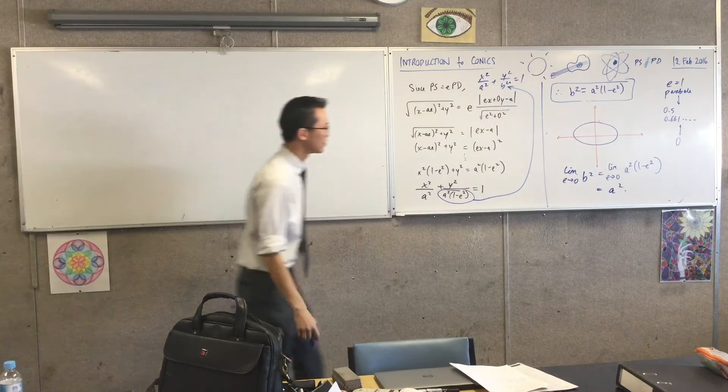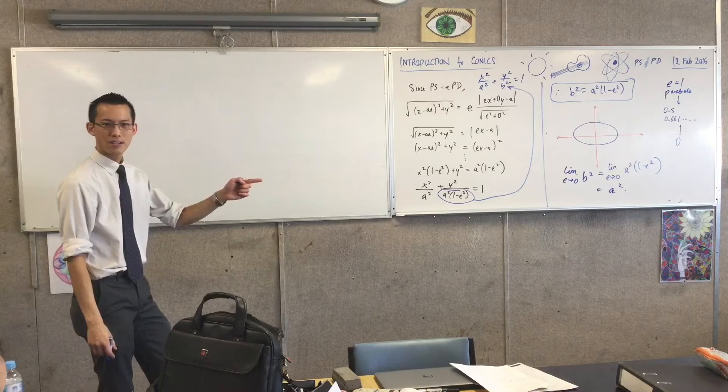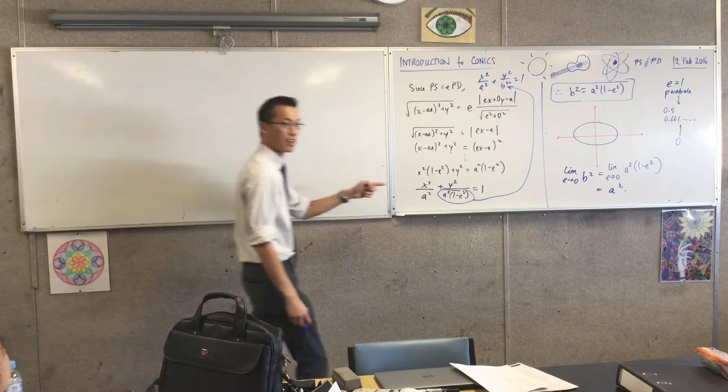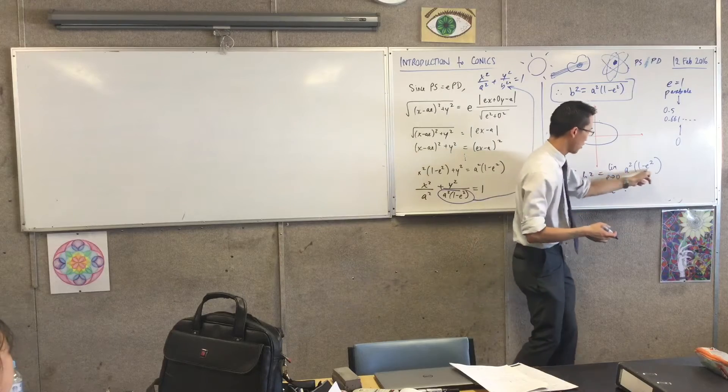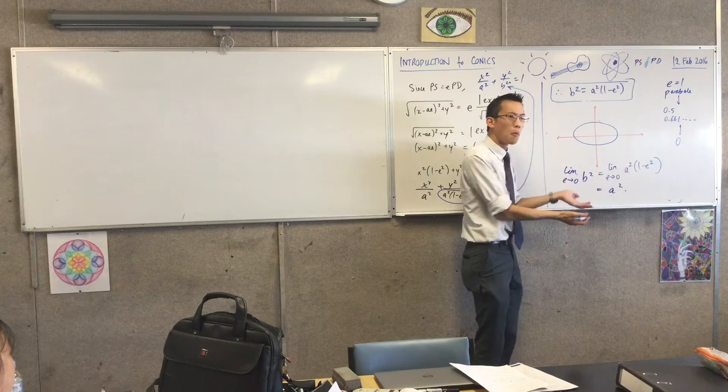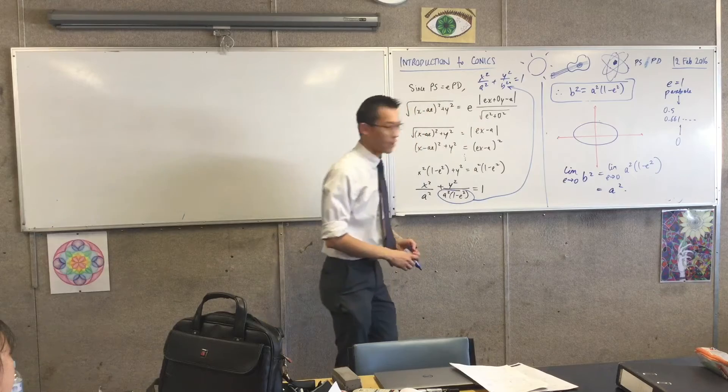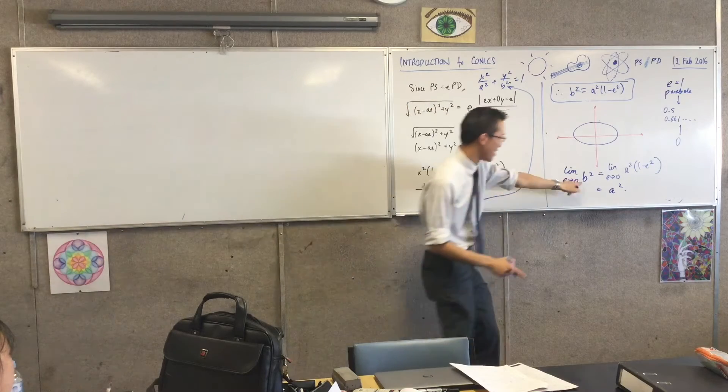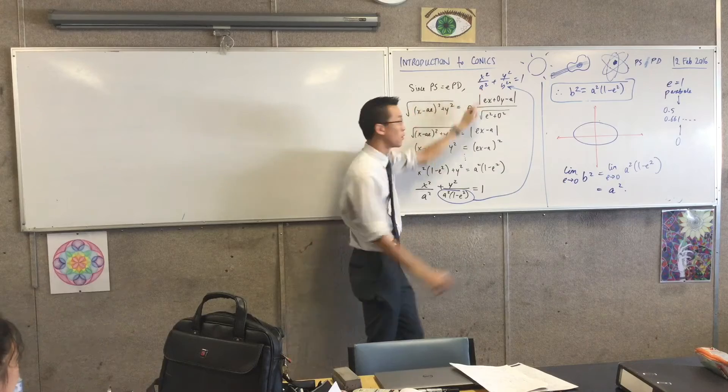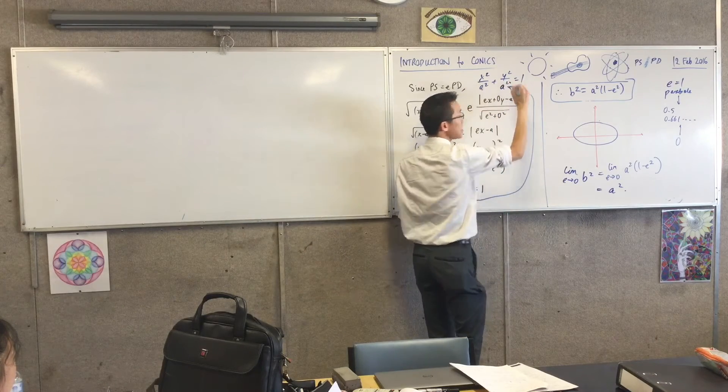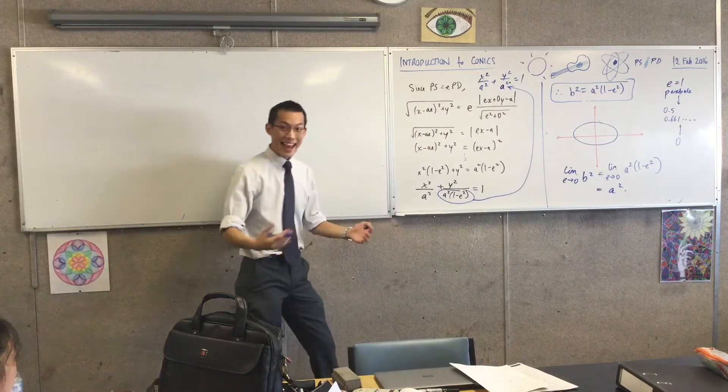Wait, what? What does that mean? What's just happened? The algebra makes sense. Like 0 there, 1 minus 0 is 1. So it has to be that. But what does it mean? It's a circle. Well, if b squared becomes a squared, then this is not your equation anymore. You get this, right? And now it makes sense.